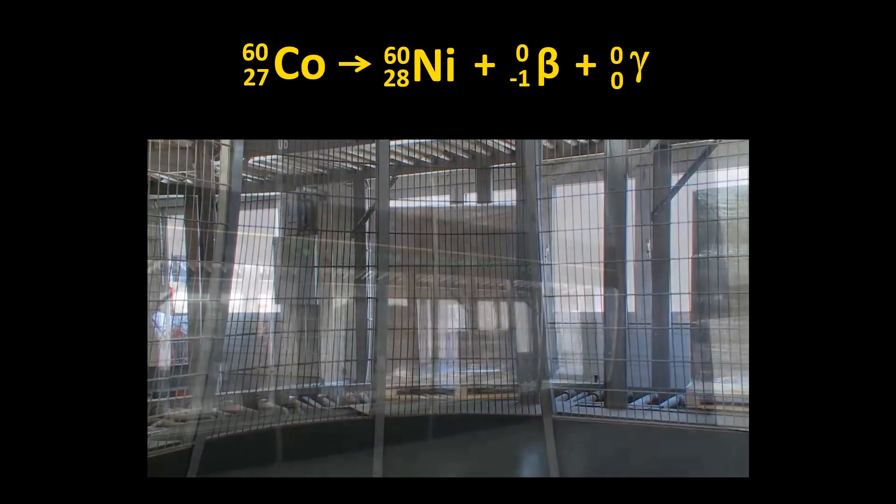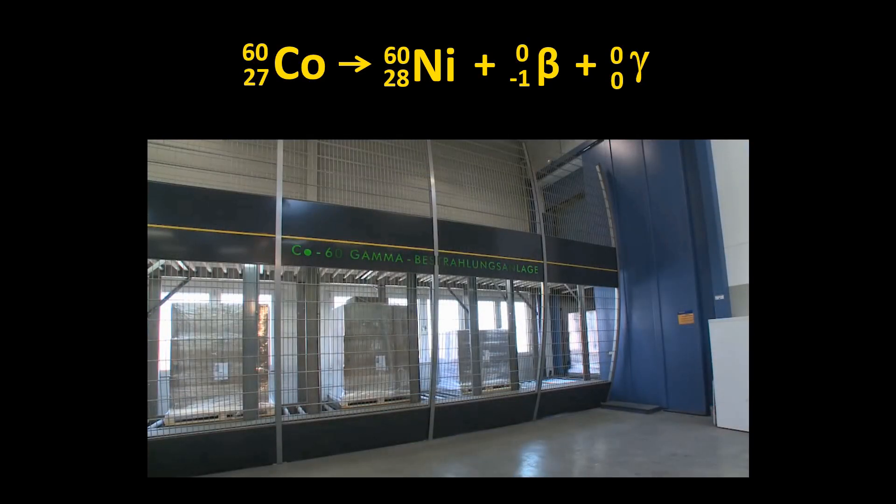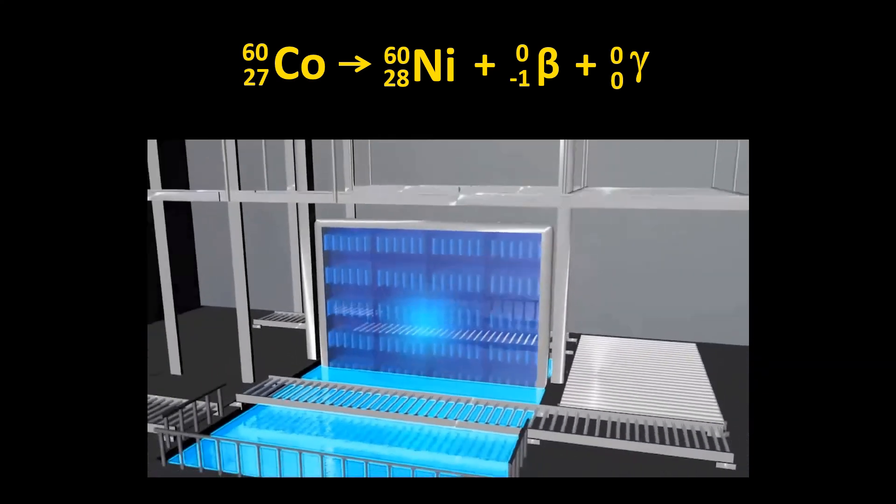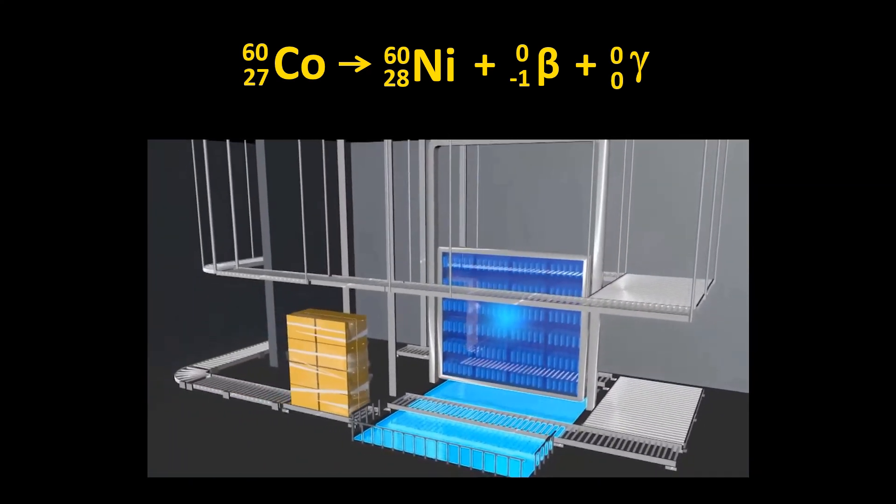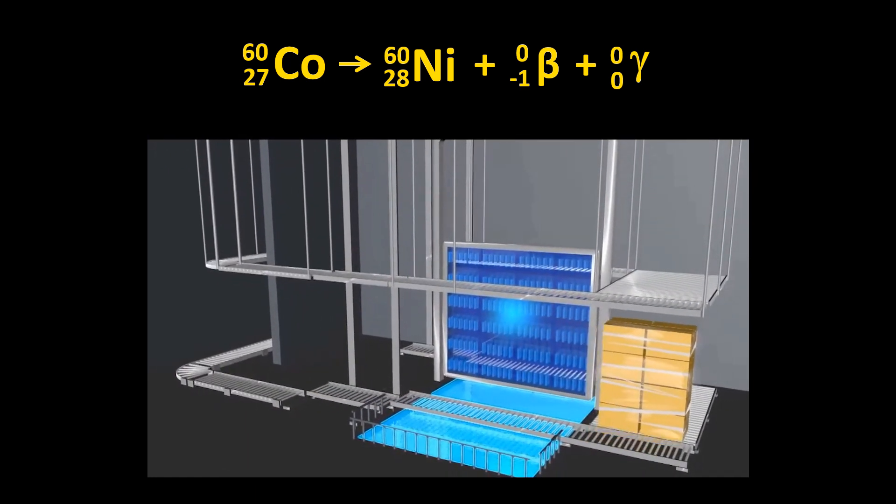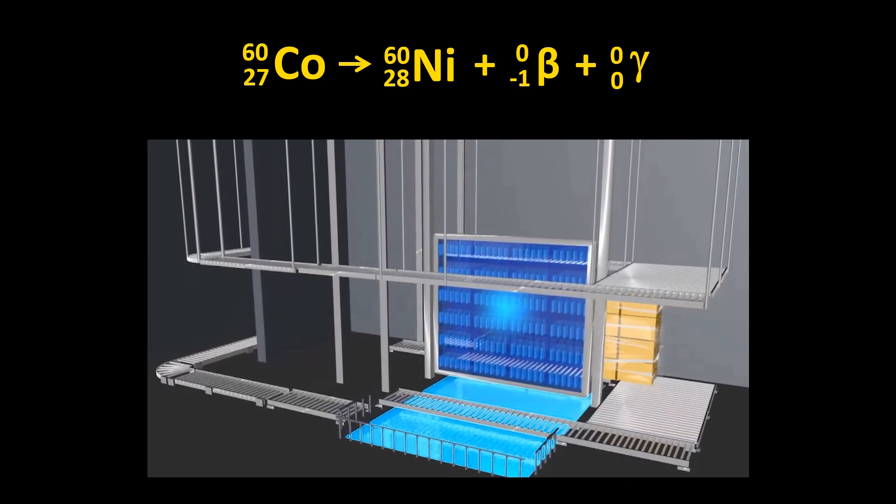We saw in episode 3 of this series that cobalt-60 is a beta minus and gamma ray emitter which is used to sterilize medical equipment. Cobalt-60 doesn't exist in nature but is produced artificially by irradiating cobalt-59 with neutrons.